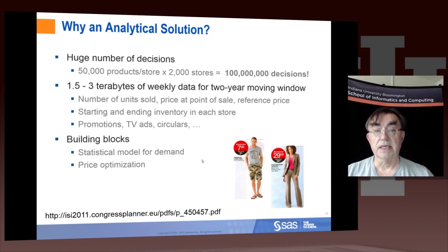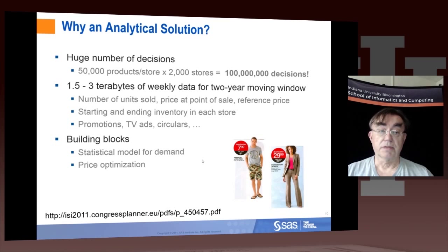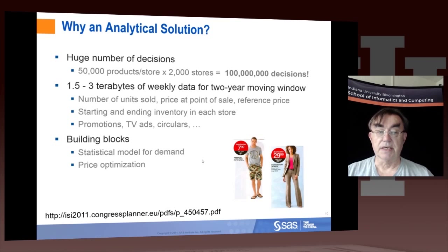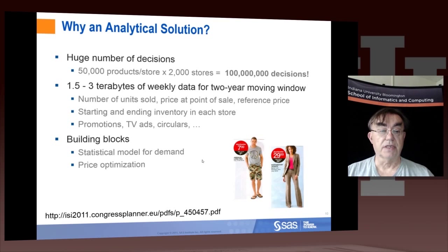This slide points out the magnitude of the problem: 100 million pricing decisions need to be made because there are so many stores and so many products. That generates many terabytes of data each week, corresponding to the last two years of history — giving you units sold, price, inventory levels, and what was done to promote each item.